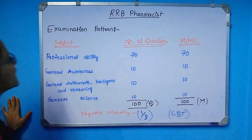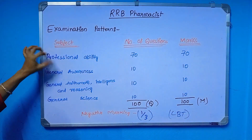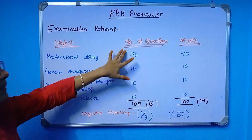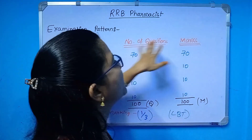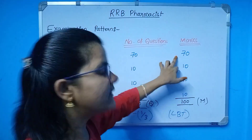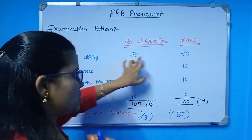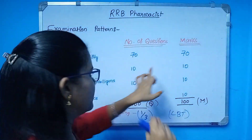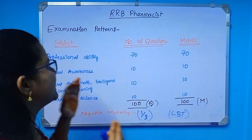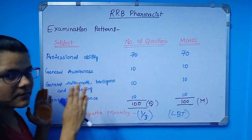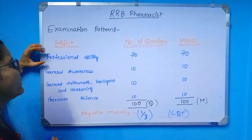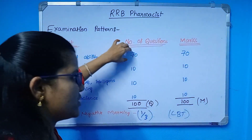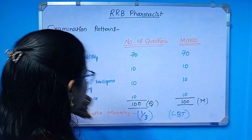Here is the examination pattern by subject. In Professional Ability, the number of questions is 70 and the number of marks is 70. Each question carries only one mark. Professional Ability is our main subject — our pharmacy subject — with 70 questions and 70 marks.